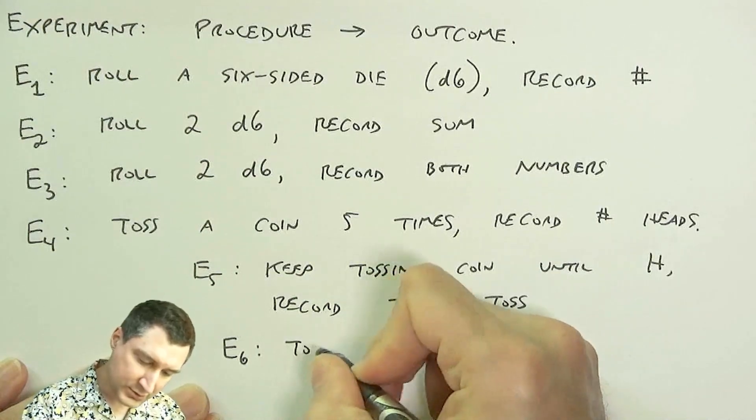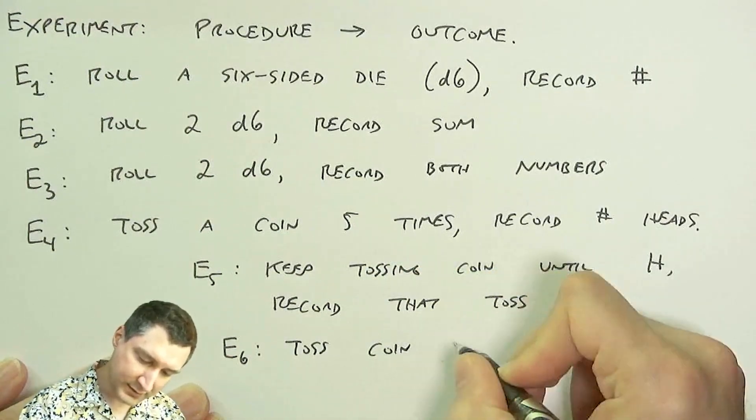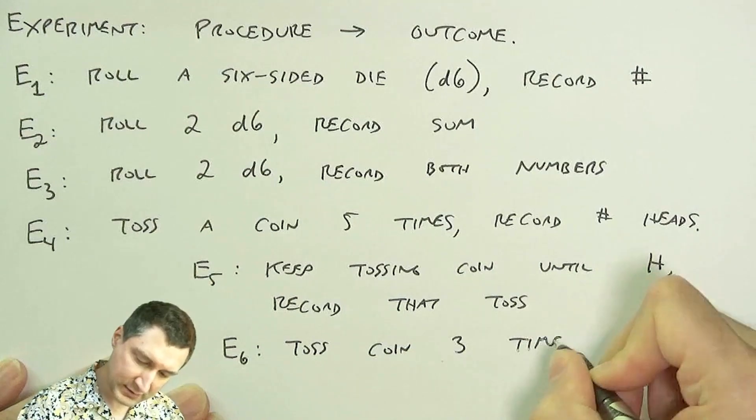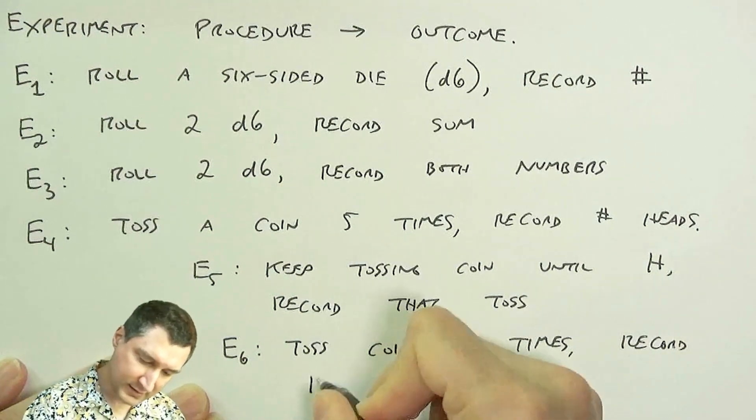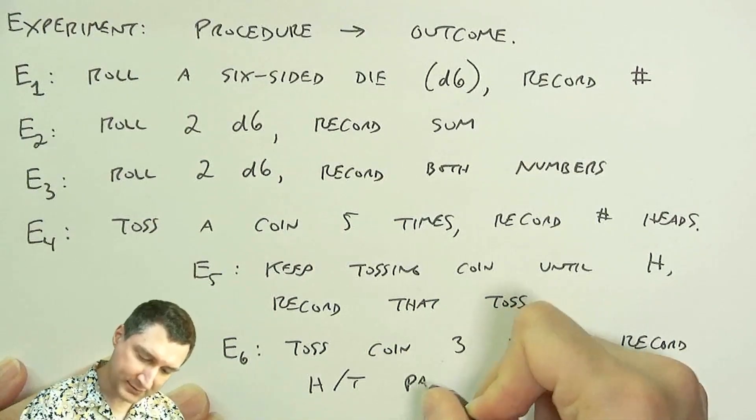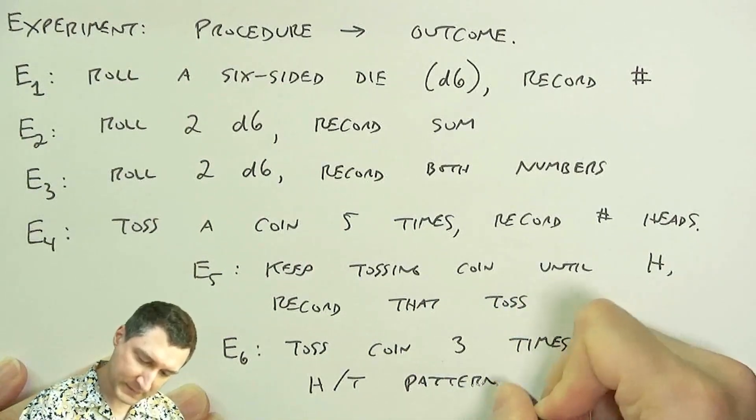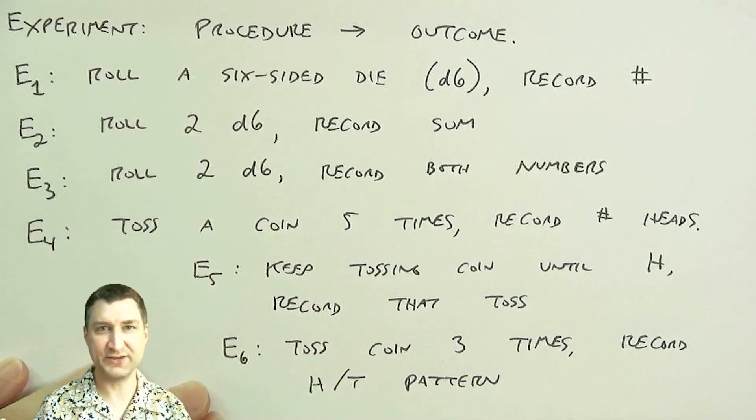Or I could toss a coin three times and I could record the head-tail pattern that I see. So I could get head-head-head, or I could get tail-tail-tail.